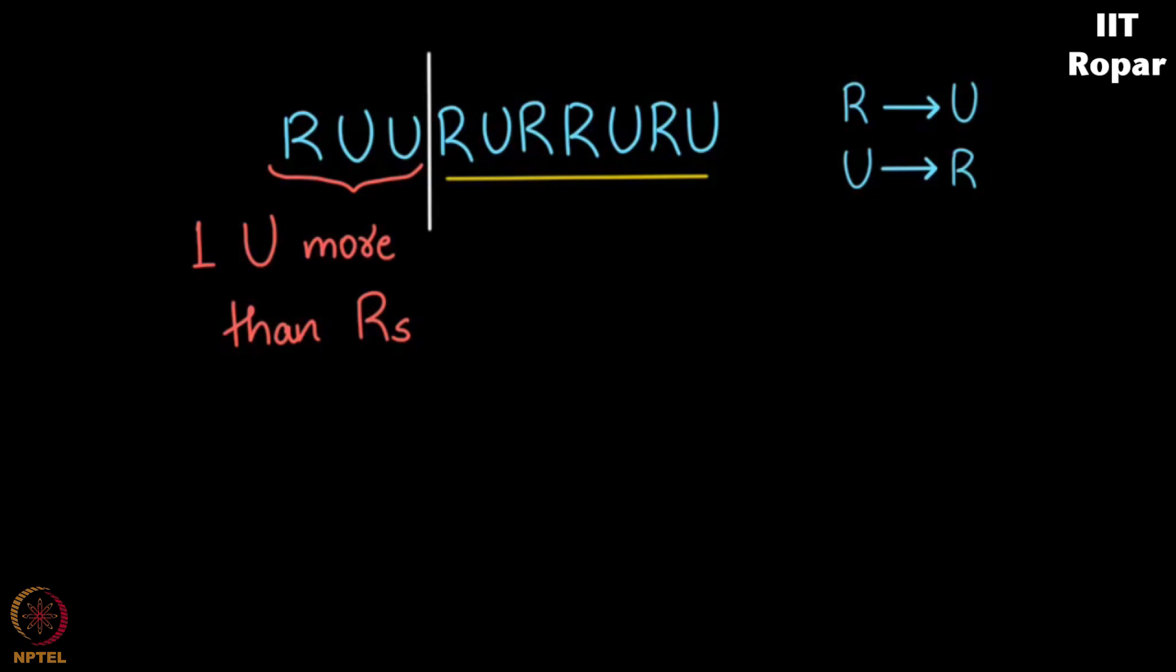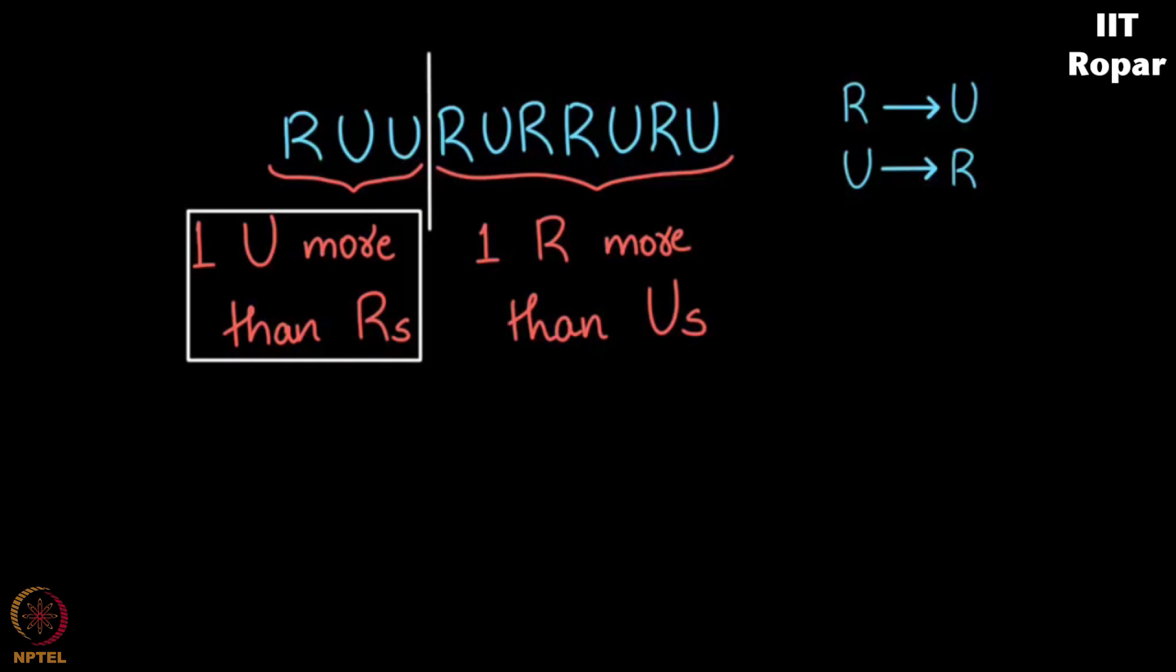Put a vertical line and on the right side when you have one U more than an R on the left side of the vertical line, obviously there should be one R more than the number of U's on the right side. That is when you will get equal number of R's and U's. Pause the video and think about it. On the left side you have one U more than the number of R's. On the right side you have one R more than the number of U's, always.